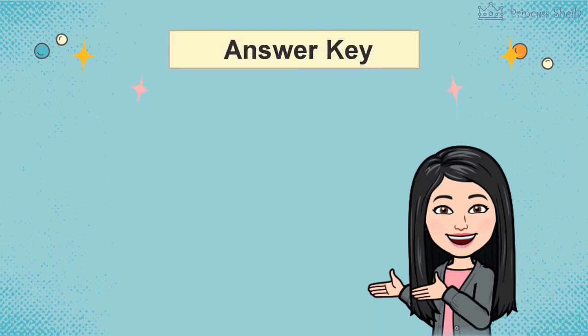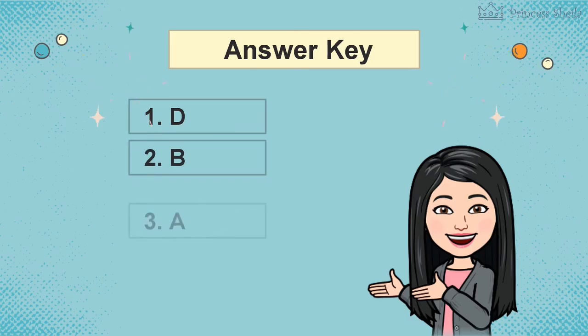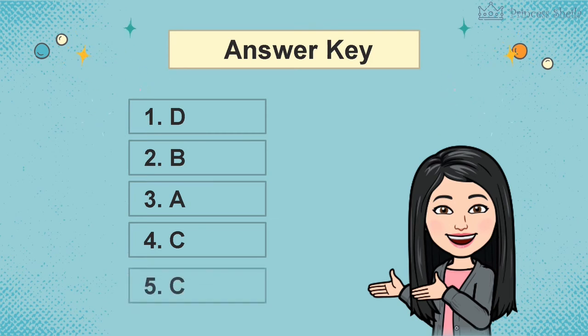These are the answers. Number 1 is D. Number 2 is B. Number 3 is A. Number 4 is C. Number 5 is C.